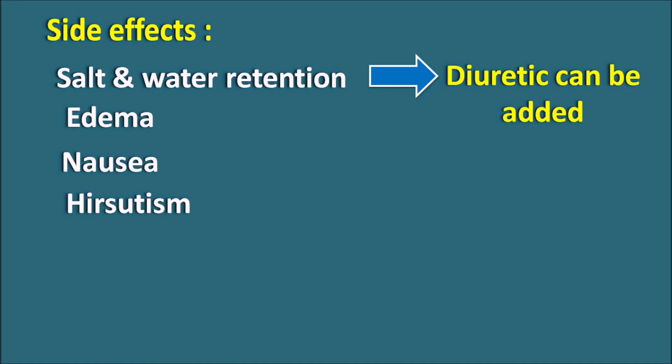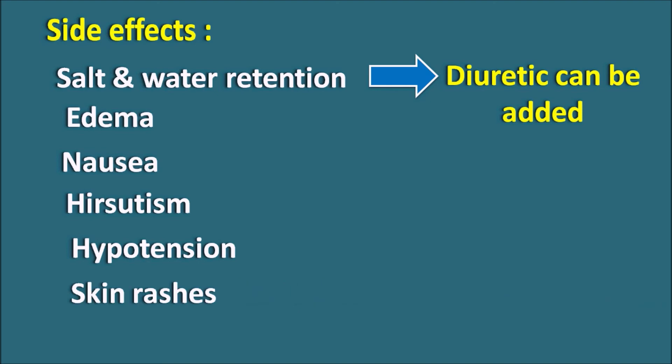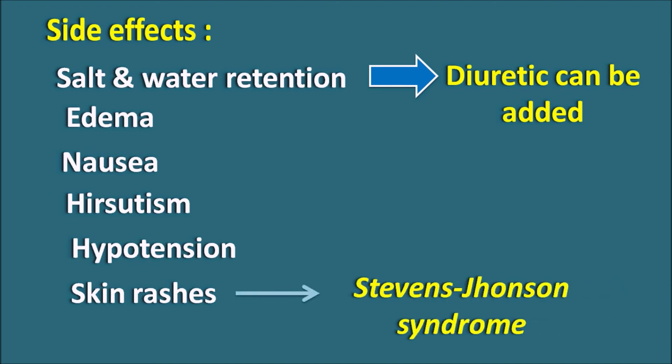When this drug is used as an antihypertensive, it can promote unwanted hair growth, which is not desirable. Another side effect is hypotension, as this drug acts as a vasodilator — though compared with direct vasodilators, this drug produces somewhat less hypotension. Finally, this drug can also produce skin rashes and can lead to severe hypersensitive reactions like Stevens-Johnson syndrome.